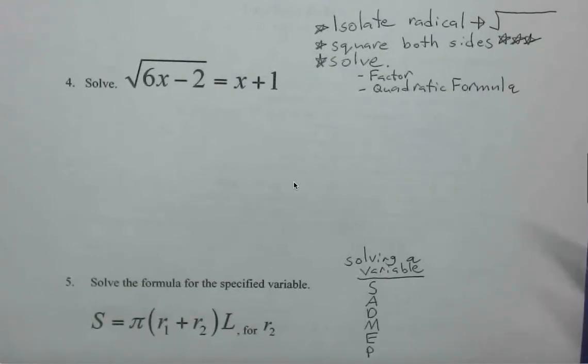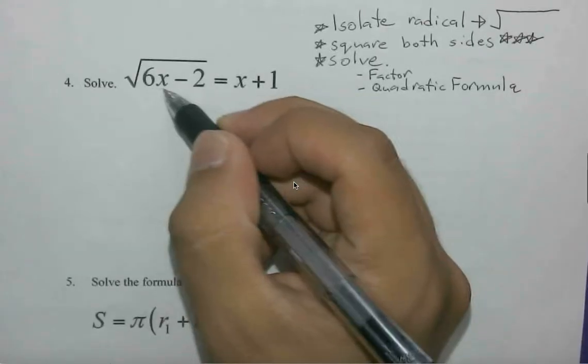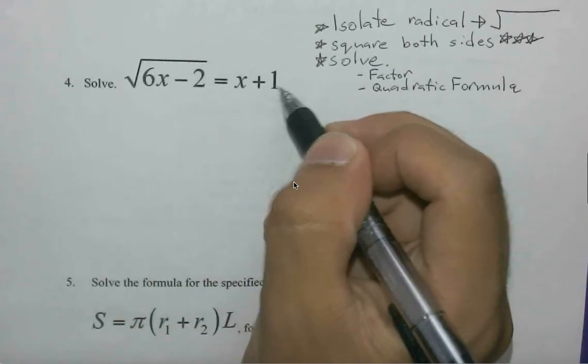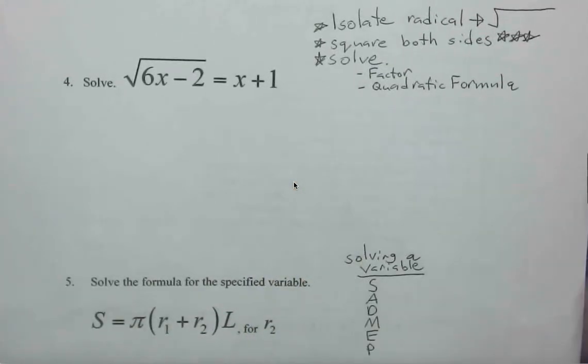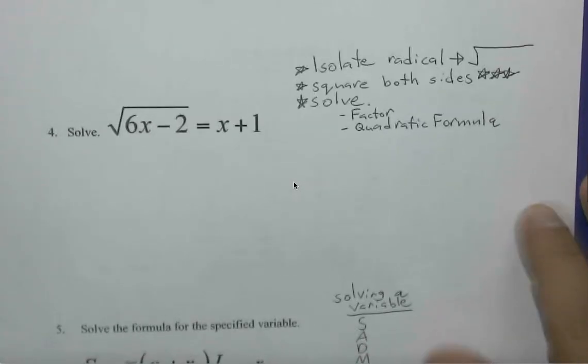We're being asked to solve this equation where we have a radical square root of 6x minus 2, and this should be equal to x plus 1, which is outside the radical. So with the steps here, I think following these will be helpful, especially if you're a fan of going step by step.